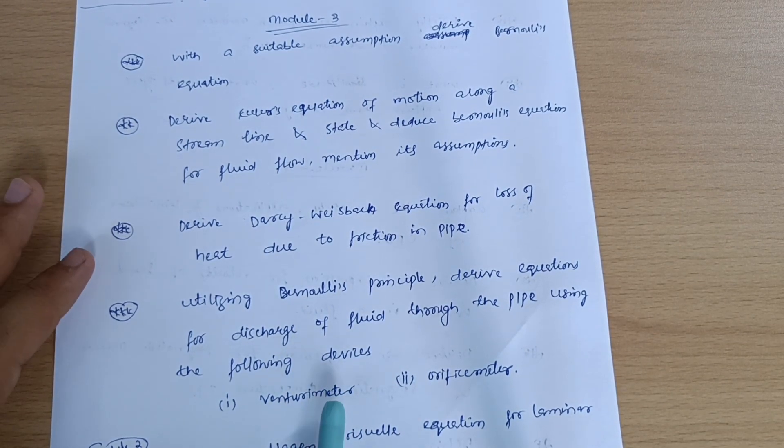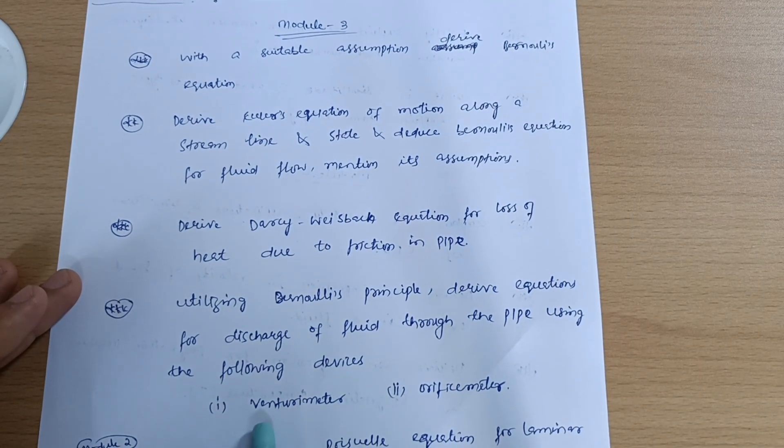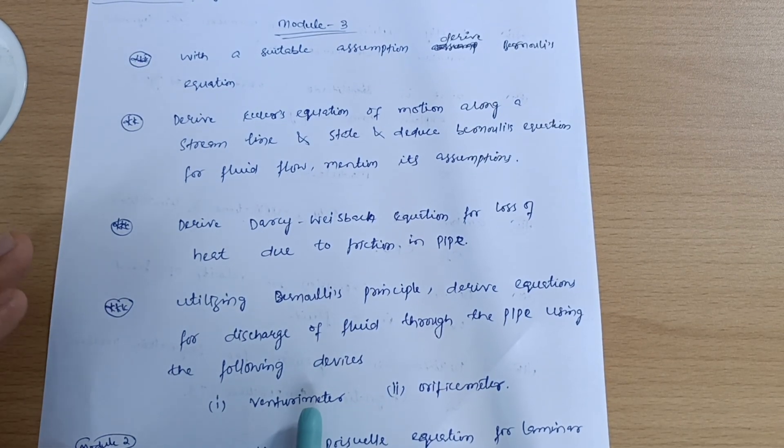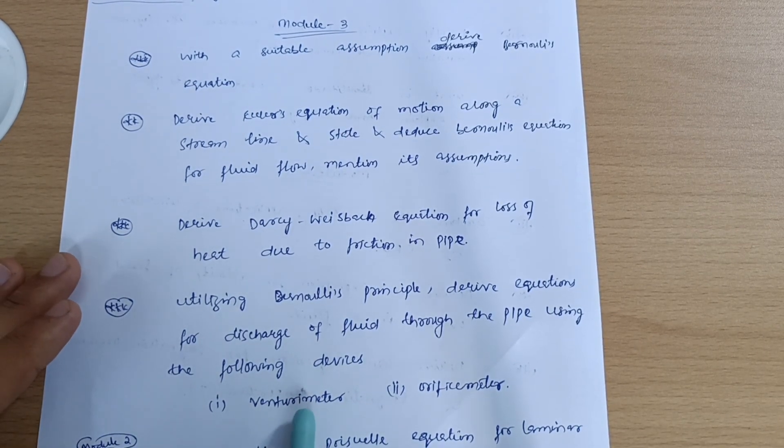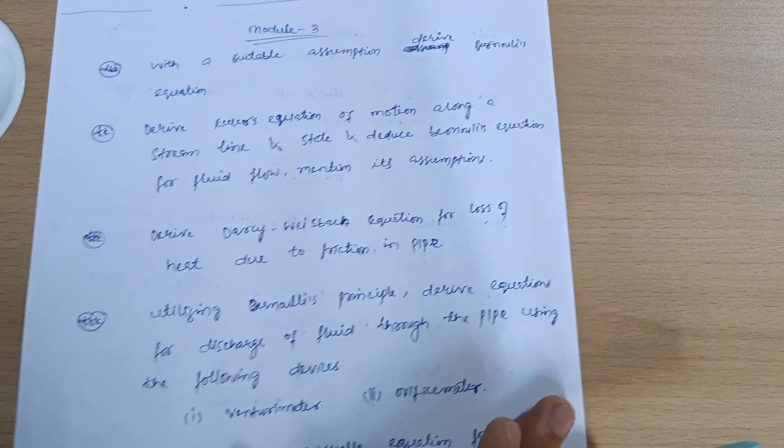When you go through the derivation part, automatically you will remember the formulas. Then only you can apply those formulas in the numerical part. If numericals appear on these topics like venturimeter and orifice meter, whatever equations you have derived, you will be able to utilize those formulas in the numerical part. This is all about Module 3.